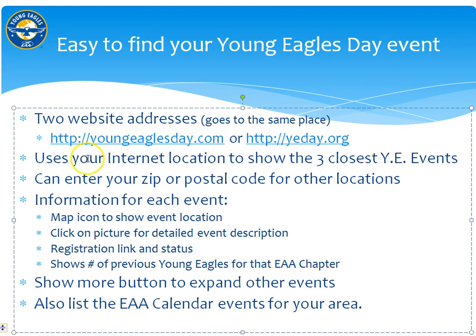The first thing it will show is your three closest young eagle events based on your internet location address. If this is not correct, or you'd like to see an event at another location, you can put your zip or postal code in.